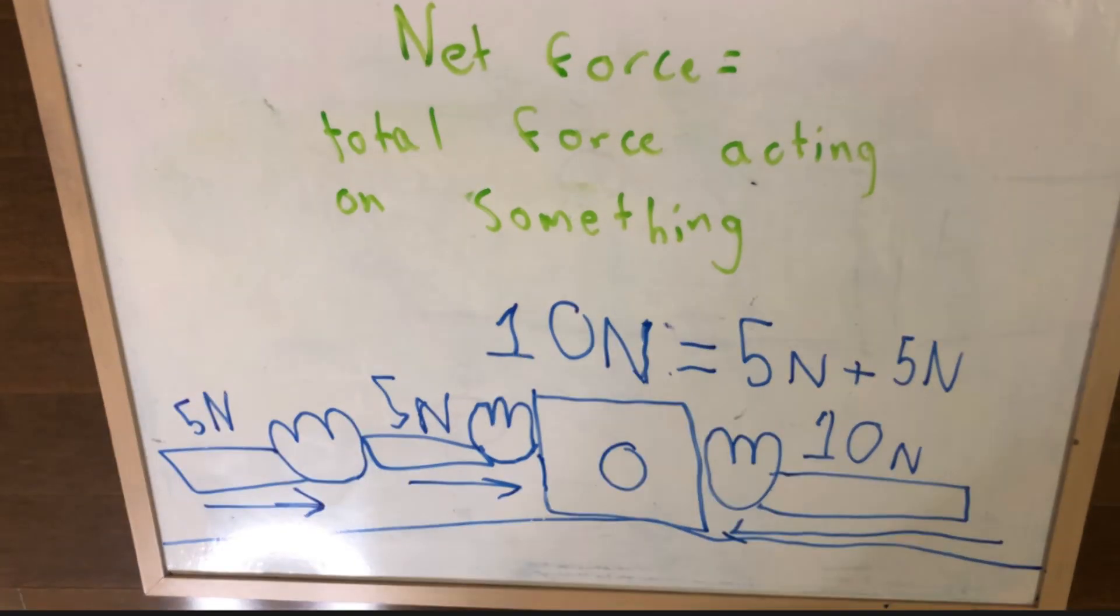Now, let's say someone else comes along and starts helping you push the box at 5 newtons. Now, both sides have an equal amount of newtons being exerted on the box, and that means that they are both equal, so they both cancel out.